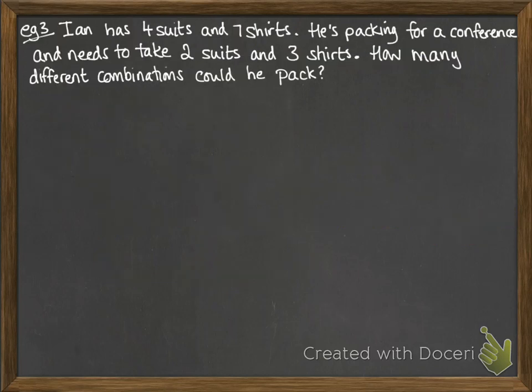Ian has four suits and seven shirts and is packing for a conference. He needs to take two suits and three shirts. How many different combinations could he pack? He's got four suits to choose from and he's picking two; seven shirts to choose from and choosing three. So we've got ⁴C₂ × ⁷C₃. Multiplying those together we get 210.